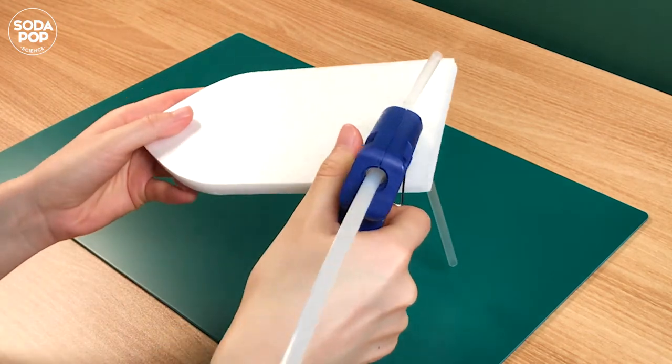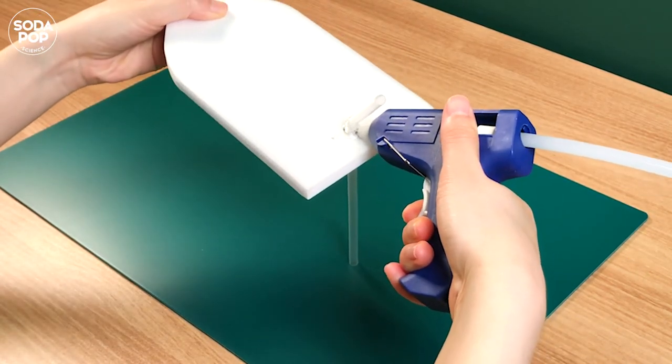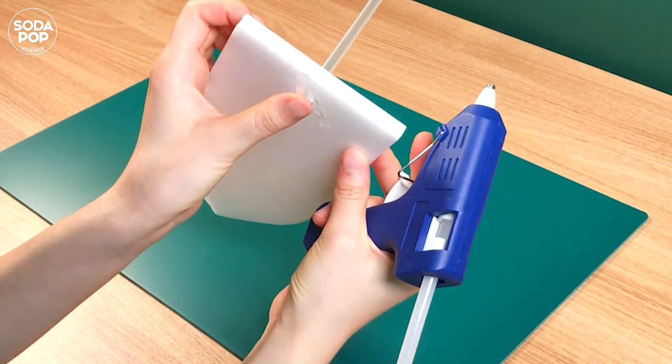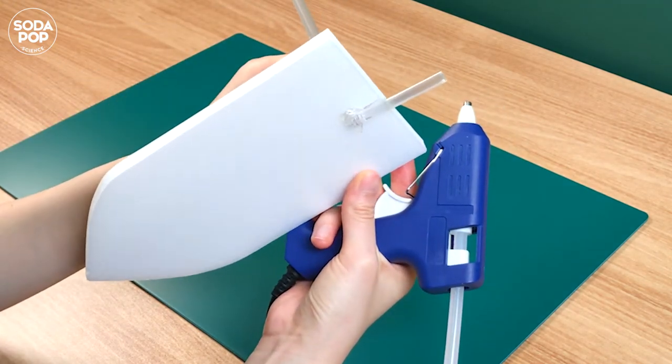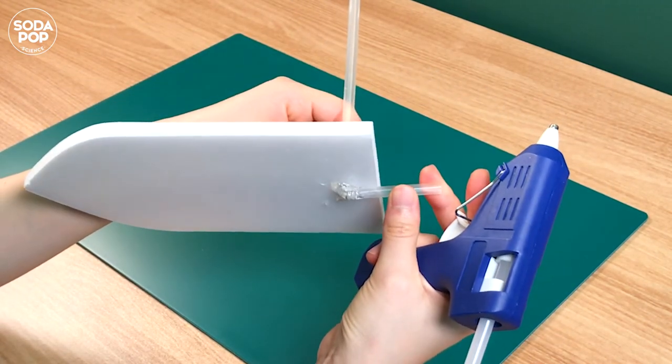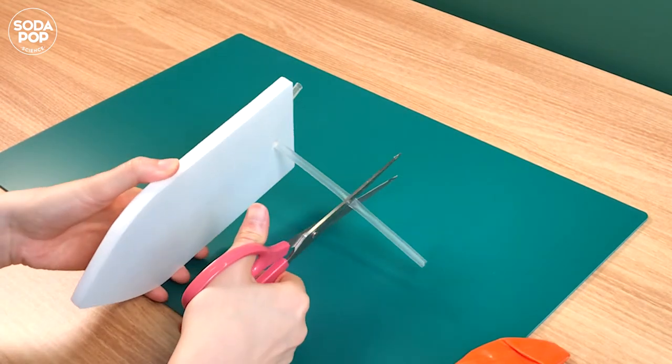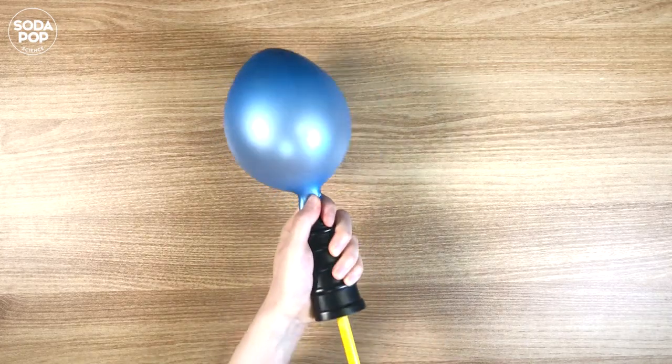Put the straw through the hole. Take a hot glue gun and fix the straw to the boat. Cut off the end of the straw. Blow your balloon up several times.